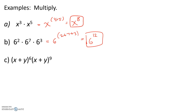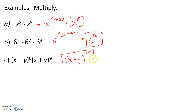Next, we have x plus y to the 6th times x plus y to the 9th. Our base is x plus y and our exponents are 6 and 9. So, we keep the same base and add 6 plus 9, which gives us x plus y to the 15th power.